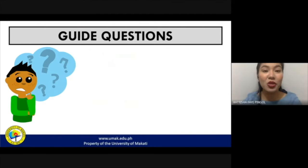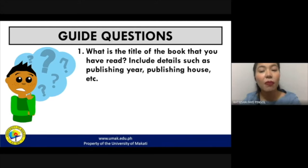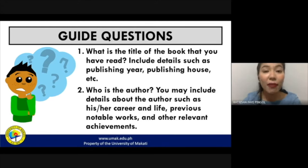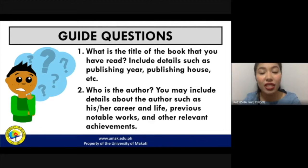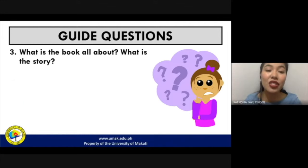Here are some guide questions you can use when writing a book critique. First: what is the title of the book, including publishing year and publishing house? You can also talk about the author — including details such as their career, other works, and relevant achievements — to establish the author's credibility. Next: what is the book all about? You can provide a short summary; you don't have to talk about all the events, just write a concise summary.